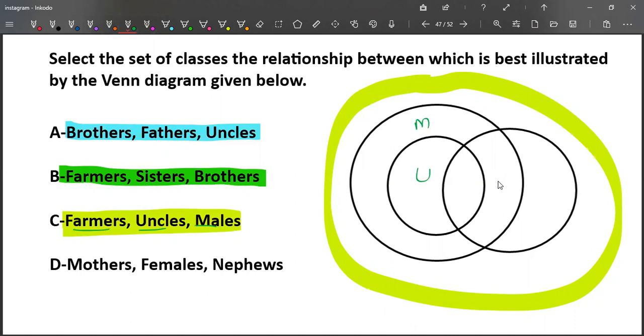For farmers, uncles may be farmers and obviously those are males. So we can give this to males, and the rest are female farmers. These farmers, uncles are males. So this particular Venn diagram, option C is our answer.